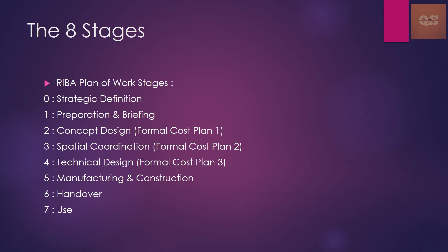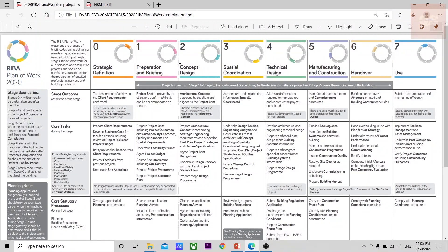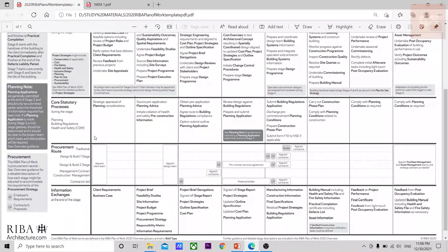During the end of Technical Design, almost all details, drawings, schematics, and specifications will be available. After Stage 4, we build the final BOQ which is sent to different contractors for tendering purposes to finalize the contractor for the project. Then there is Stage 5 - Manufacturing and Construction, Stage 6 - Handover, and Stage 7 - the final use of that building. More details can be found by searching for 'RIBA Plan of Work stages' online where a PDF with all stage definitions, outcomes, and tasks is available.